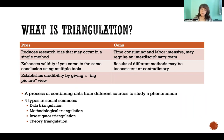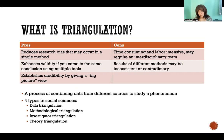In social sciences, there are four types of triangulation: data triangulation, methodological triangulation, investigator triangulation, and theory triangulation. I'm going to go through each of those starting on the next slide.